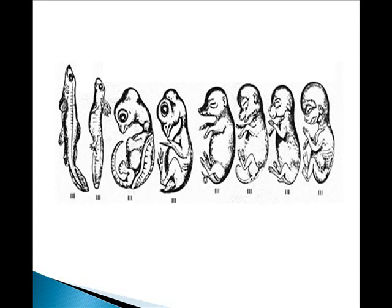You can kind of tell which one each one is now. One of the things to remember with embryological evidence is that the more evolutionarily distant an organism is from another, the earlier you can identify its differences from the others in development.